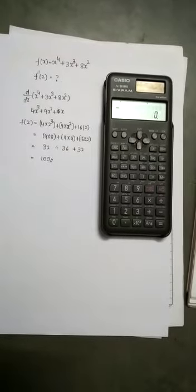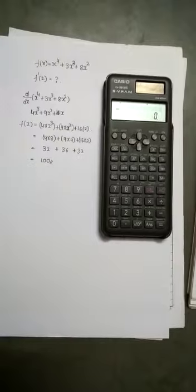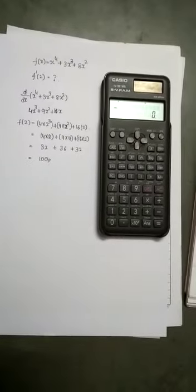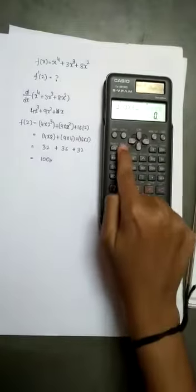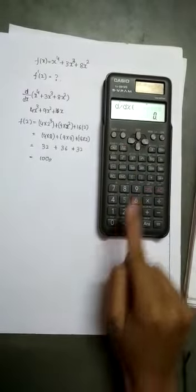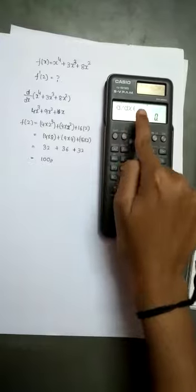Today we will see how to get differentiation of a given function by the calculator. First click on the shift button, next integral dx button. The differentiation sign will come on the screen, that is d by dx of the function.